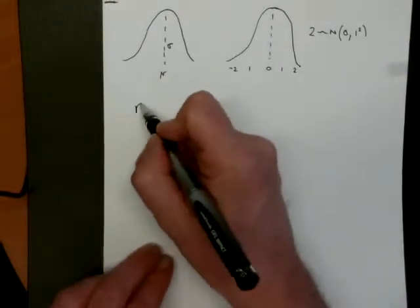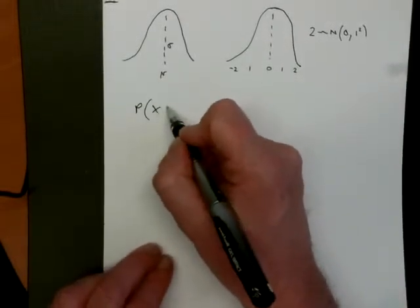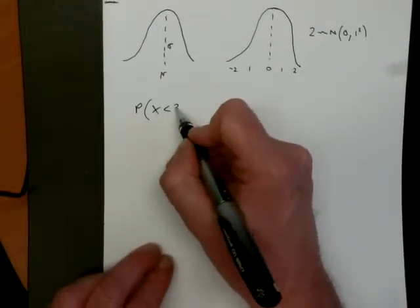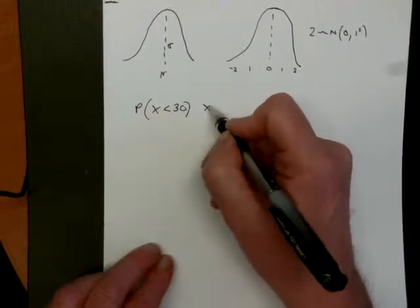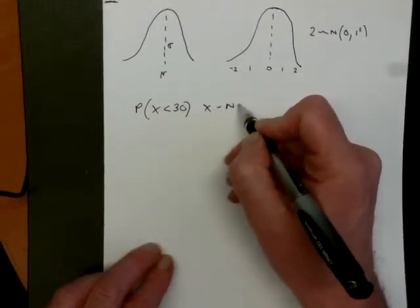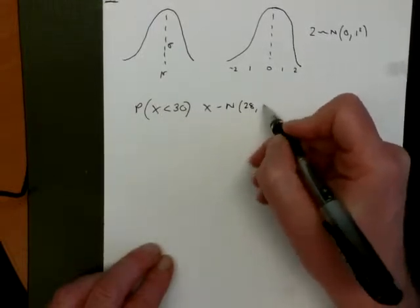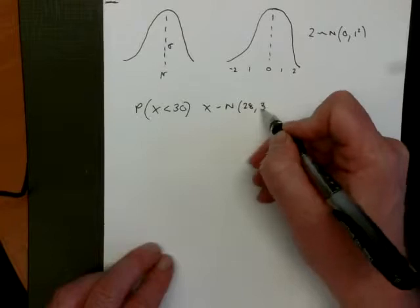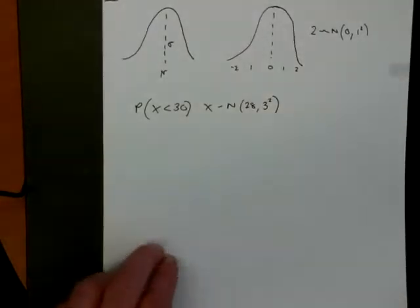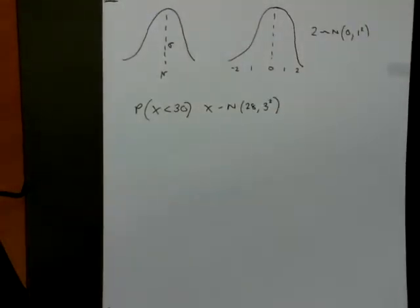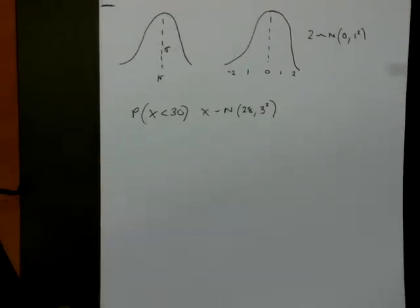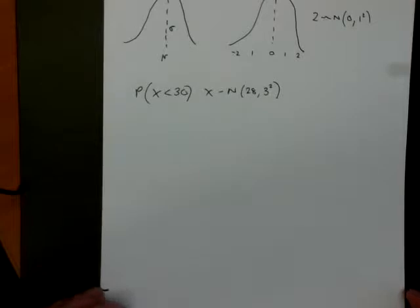So if we get a problem — what is the probability that x is less than 30, when x comes from a normal distribution with mean 28 and standard deviation 3 — then our task is to transfer the x information into z information and then answer it using our z tables.